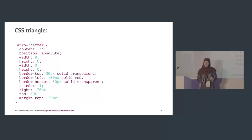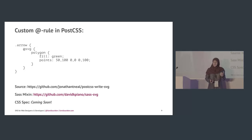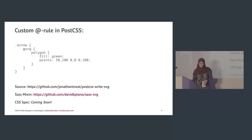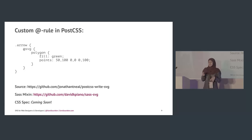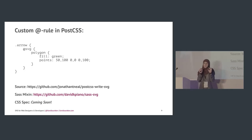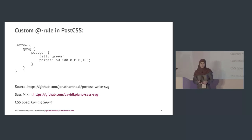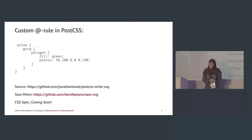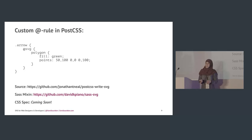In the future we won't have to do this. We're going to get custom at-rules — specifically an `@svg` at-rule that allows you to create simple SVG shapes inside your stylesheets. There's a PostCSS plugin that provides the ability to use future SVG features in the browser today. And someone created a Sass mixin so you can create these simple shapes in Sass today. The CSS spec is coming soon.